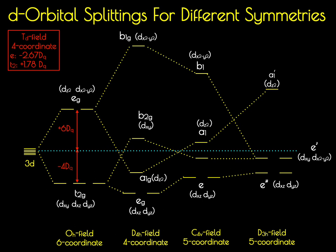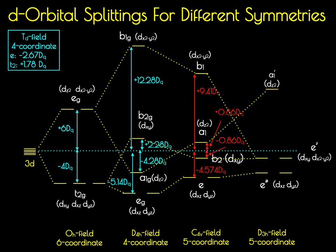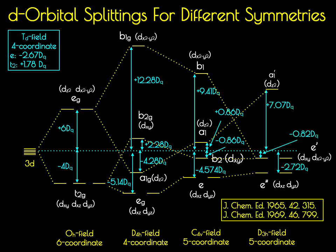We've already done this for the Oh, Td, and D4h fields. These energies have been tabulated for C4v symmetry, showing small splittings of A1 and B2 relative to the barycenter, and also for the D3h field. It's not necessary to memorize or derive these values — they've been tabulated and known for some time. Two good references are Journal of Chemical Education articles from the 1960s, where crystal field splitting energies for all of these fields, and more, have been compiled.